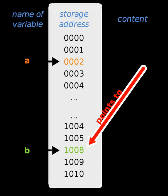In many languages, pointers have the additional restriction that the object they point to has a specific type. For example, a pointer may be declared to point to an integer. The language will then attempt to prevent the programmer from pointing it to objects which are not integers, such as floating point numbers, eliminating some errors. For example, in C, money would be an integer pointer and bags would be a char pointer. The following would yield a compiler warning of 'Assignment from incompatible pointer type' under GCC, because money and bags were declared with different types.